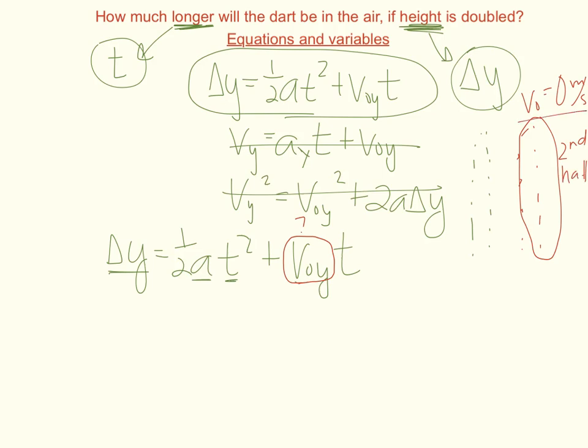So if the initial velocity is zero, the nice thing is this whole term goes away. Zero times time is zero. So now I have an equation I can work with that's relating time, height, and it's got a constant in there which we know is acceleration.